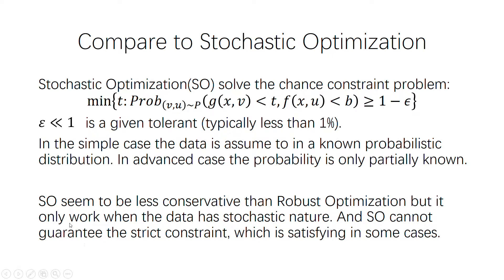But stochastic optimization only works when the data has a stochastic nature. Sometimes real-world data do not have such a stochastic nature, and stochastic optimization cannot guarantee the strict constraint or strict optimal value, which is not satisfying in some cases. For example, we may not be able to tolerate some violation of our schedule, even if the chance is pretty low.